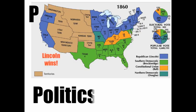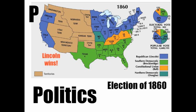Let's not forget politics. When Abraham Lincoln won the election of 1860, this divided the country clearly into a Northern region that voted for Lincoln and a Southern region who voted for somebody else. Politics.